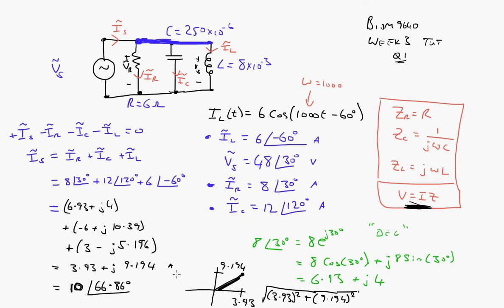And at an angle of 66.86 degrees. Where did I get that from? This happens to be inverse tan of the y over the x. So it's 9.194 divided by 3.93. And it's a current, I believe. So the units will be amps. That's it.